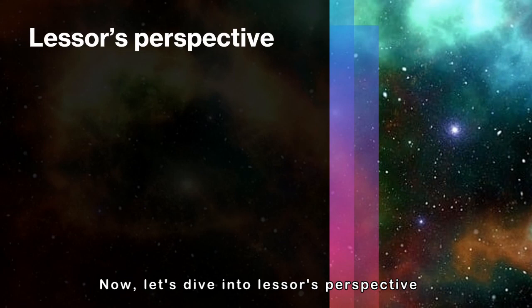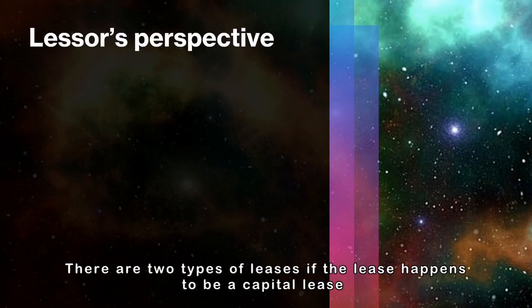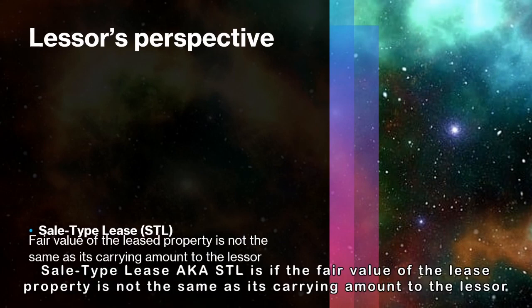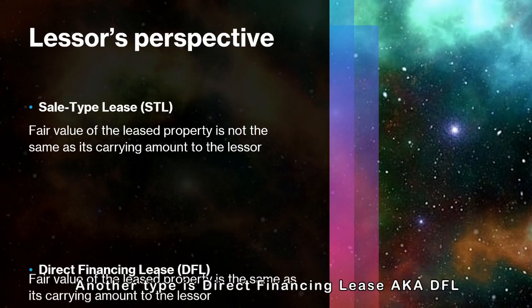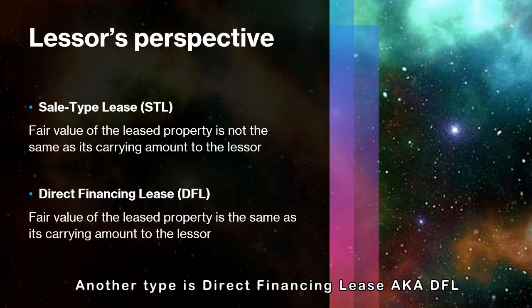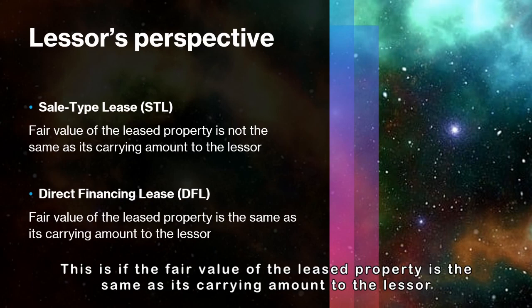Now let's dive into the lessor's perspective. There are two types of leases if the lease happens to be a capital lease. Sale type lease, also known as STL, is when the fair value of the lease property is not the same as its carrying amount to the lessor. Another type is direct financing lease, also known as DFL, which is when the fair value of the lease property is the same as its carrying amount to the lessor.